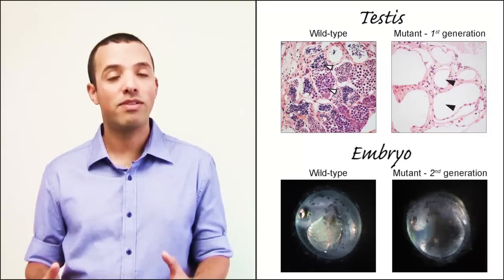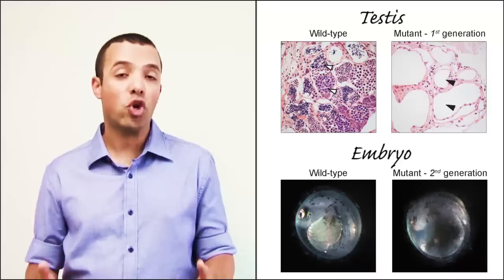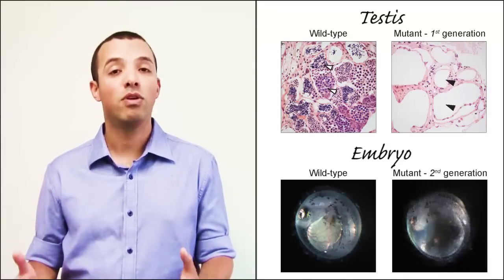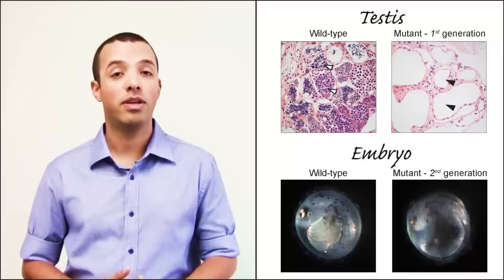This telomerase-deficient fish, or mutant killifish, is currently the fastest model system for dyskeratosis congenita in vertebrates.